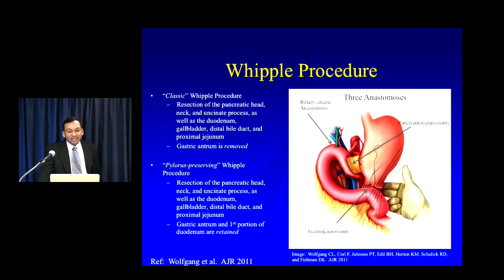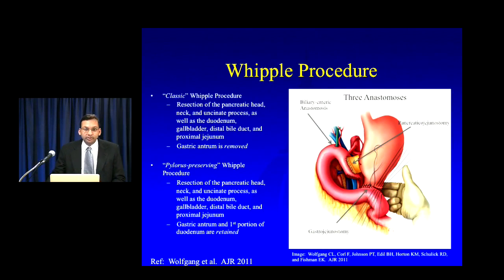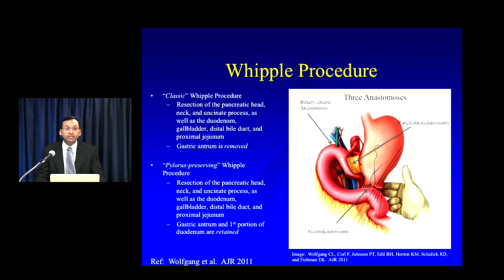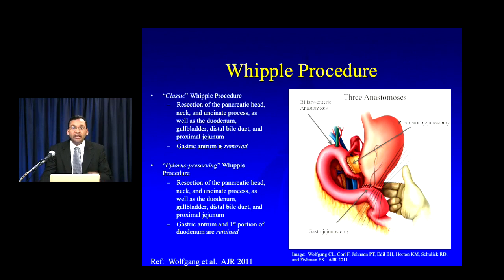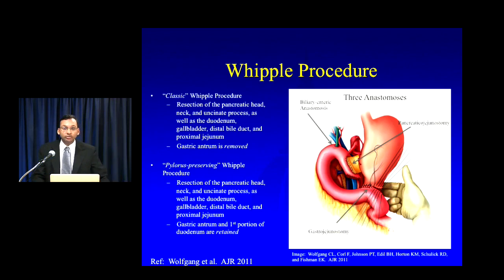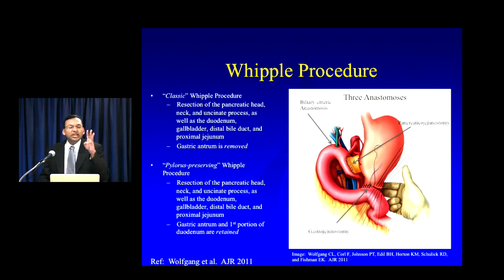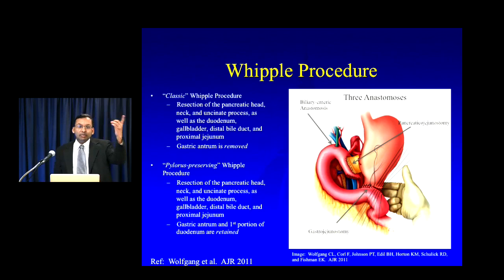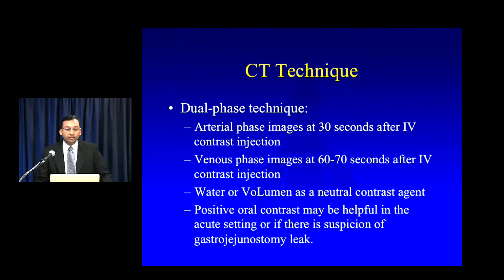The classic Whipple procedure gives you three anastomoses: the pancreaticojejunostomy — the pancreatic remnant and the jejunum; a biliary-enteric anastomosis, which can be a hepaticojejunostomy or a choledochojejunostomy; and then either a gastrojejunostomy in the classic Whipple or a duodenojejunostomy in the pylorus-preserving procedure. Those are the three anastomoses to look at carefully every time you evaluate one of these cases — every case, find the hepaticojejunostomy, pancreaticojejunostomy, and either the gastrojejunostomy or duodenojejunostomy.